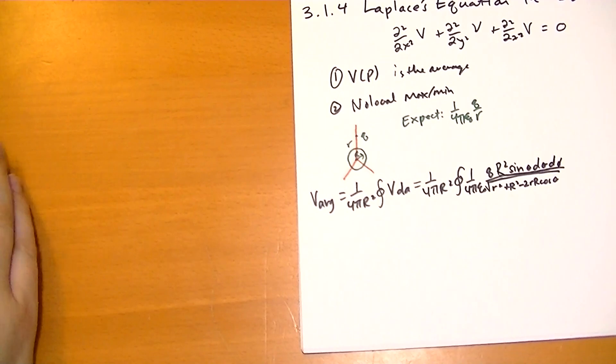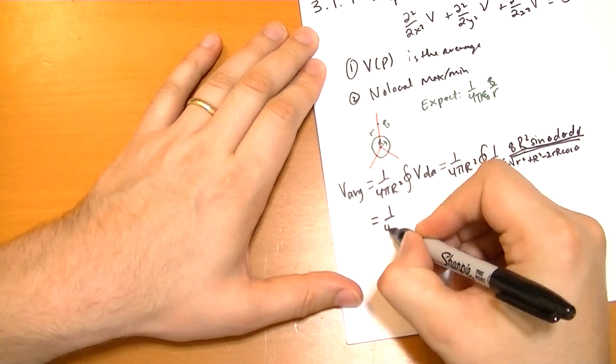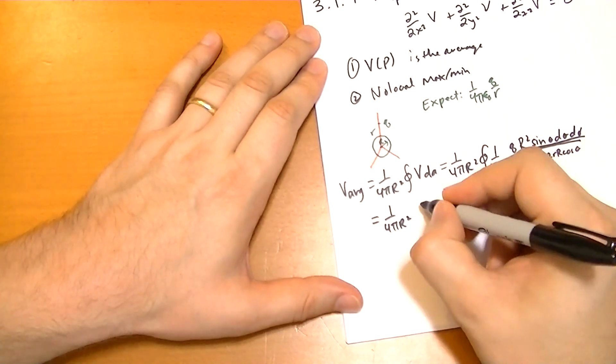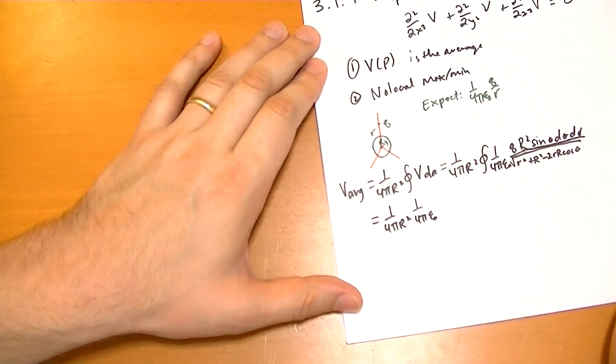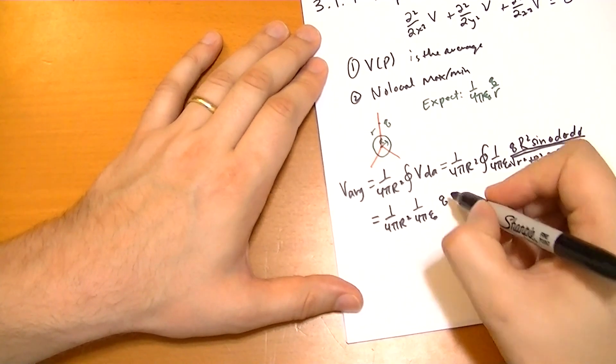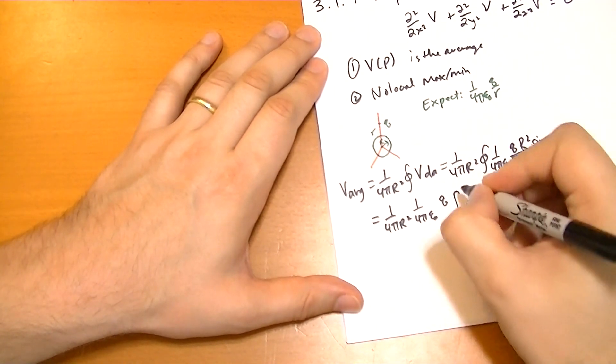That's the surface area of the sphere. And then we're going to bring out 1 over 4 pi epsilon naught. And we can bring out q because that's constant. And we're going to have the integral of d phi from 0 to 2 pi.